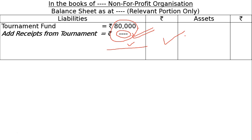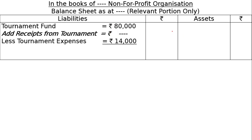The B part is tournament expenses. Here, the receipt from the tournament is zero, so it is not written in the exam. The expenditure is: less tournament expenses Rs. 14,000. So we minus it: 80 minus 14 equals 66,000. This is the tournament fund amount, and it will be shown in the final column of the liabilities side as Tournament Fund Rs. 66,000.